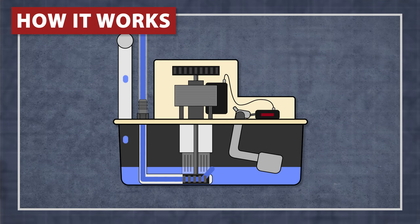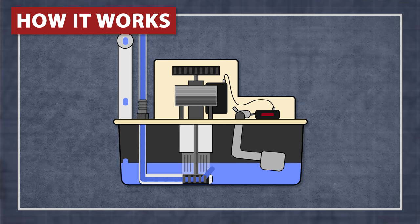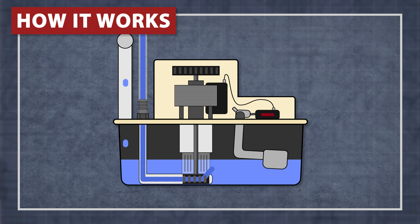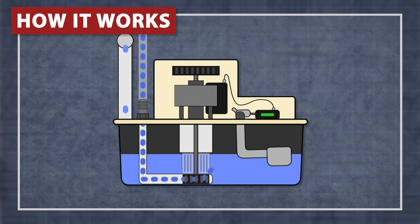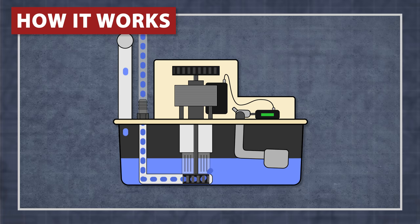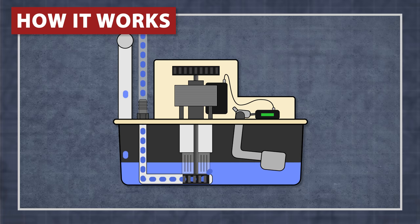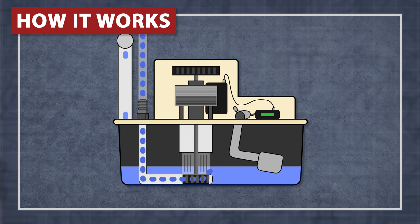As water flows into the condensate pump basin, the water level rises and triggers the float switch. The motor then pumps the water up through the discharge tube. When the water level drops, the float switch disengages and shuts off the pump.